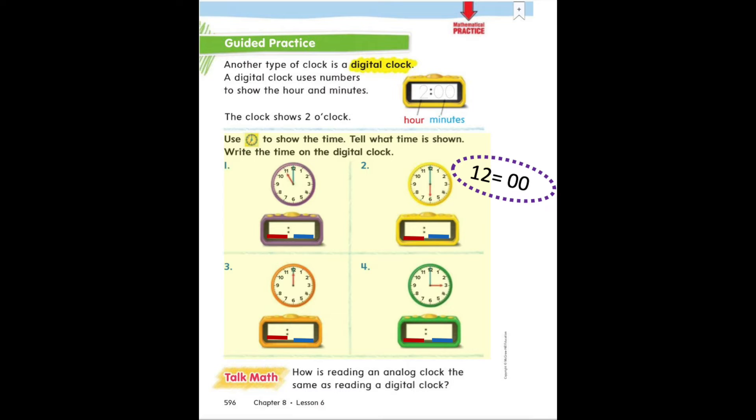Remember the red hand is pointing to the hour and the blue hand is pointing to the minutes. When the blue hand is pointing straight up at the twelve, you write zero zero on the right side of the digital clock. And I put that reminder up on the paper here too.